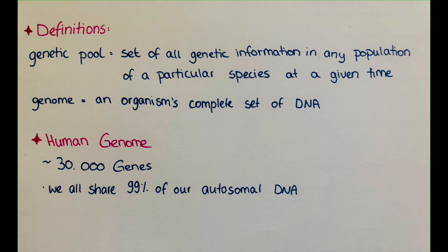It doesn't mean that if, for example, 10,000 years ago there was a gene for violet eyes, that would not be in the genetic pool anymore — because today there is no gene for violet eyes. So the genetic pool is only what exists today and only for one species, but includes all its genetic information. A genome, by contrast, is one organism's complete set of DNA.